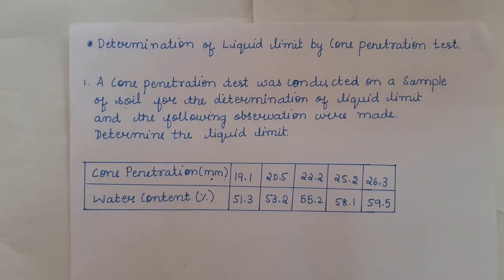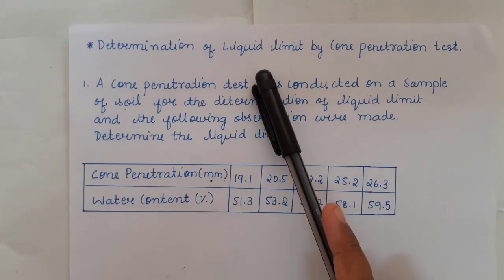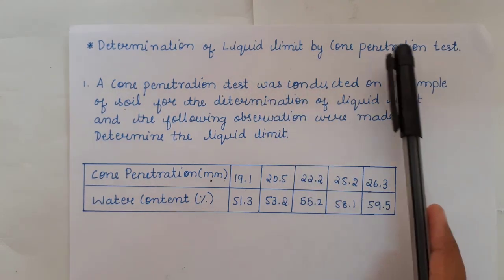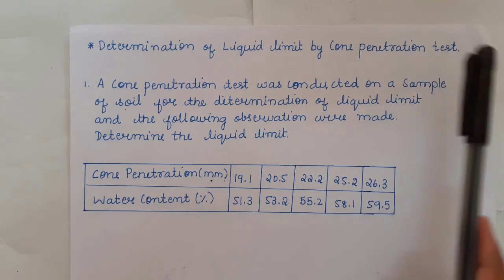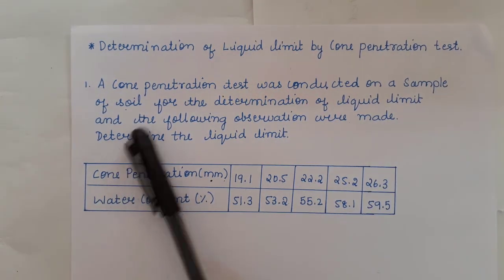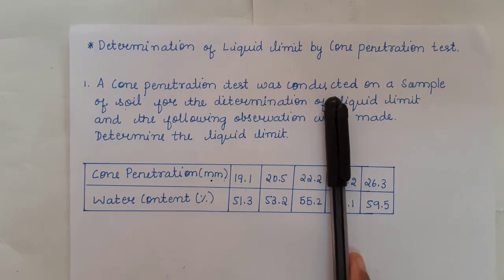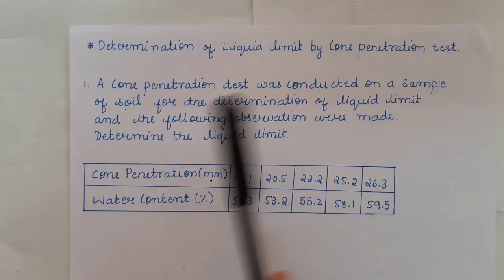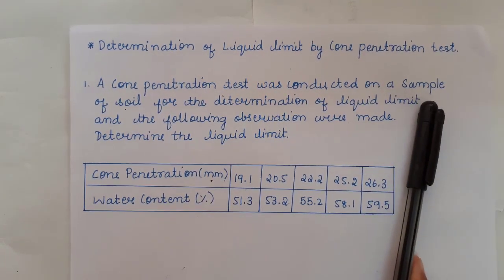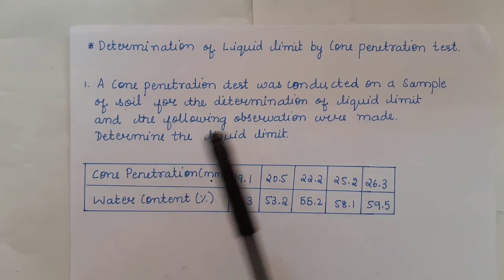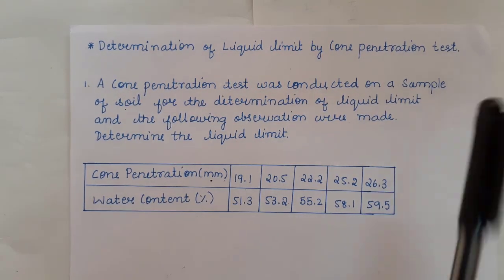The next method to calculate the liquid limit of the soil is by cone penetration method. A cone penetration test was conducted on a sample of soil for the determination of liquid limit and the following observations were made.